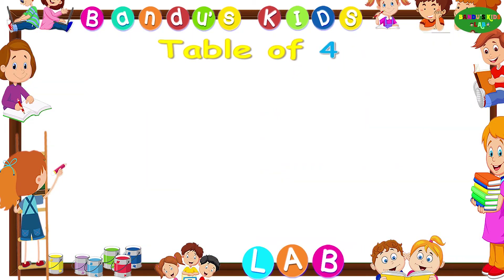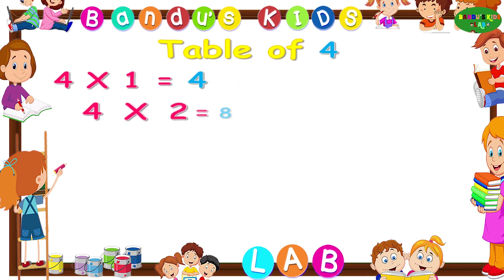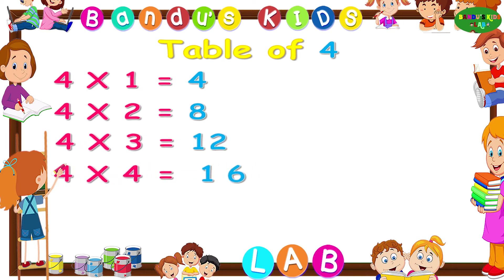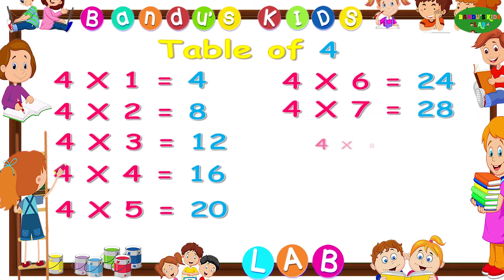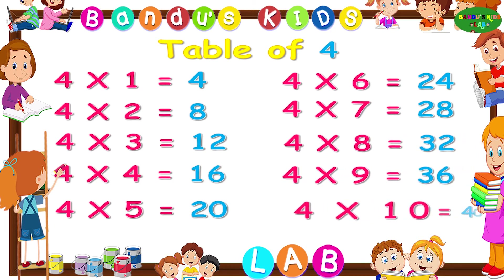Now let's revise the table of four one more time by singing. Four ones are four. Four twos are eight. Four threes are twelve. Four fours are sixteen. Four fives are twenty. Four sixes are twenty-four. Four sevens are twenty-eight. Four eights are thirty-two. Four nines are thirty-six. Four tens are forty.